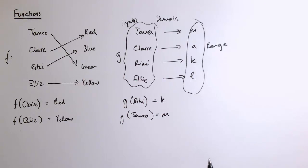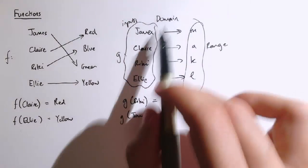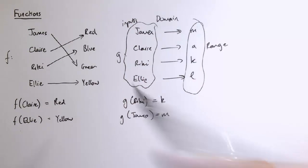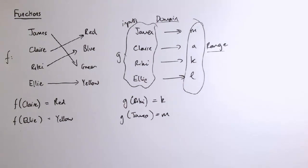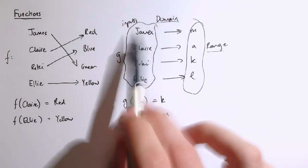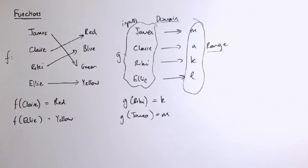So I can take any element in the domain, put it into the function and I'll get out an element in the range. And if we extended this domain to be all different names of people, then the range would be all the different letters in the alphabet. For any letter in the alphabet, you could find some name that would have that letter as its third letter.